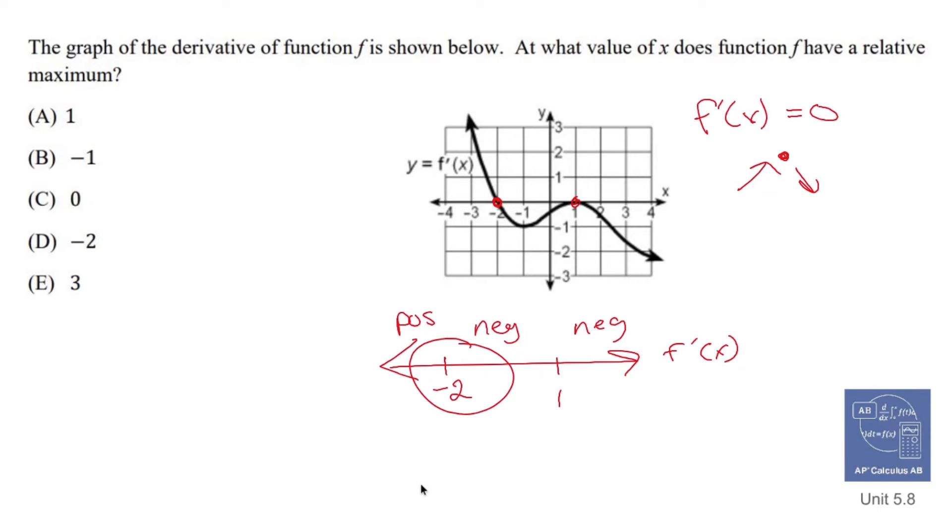So right here at negative 2, I go from positive increasing to negative decreasing, which means I have a relative maximum at that guy right there, negative 2. So that's how you do it.